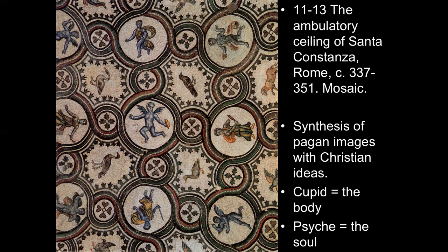Cupid, which for ancient Romans was a symbol of earthly and profane things — love, lust — came to represent in Christianity the body. And Psyche, the representation for Romans and Greeks of the mind, came to mean for Christians the soul. This dichotomy between body and soul was really important to Christians, who felt the body had to be preserved so that the soul could rejoin it after the apocalypse, and the two could descend together into heaven.